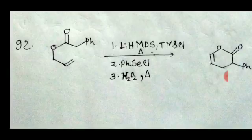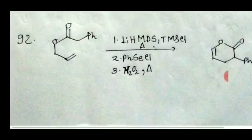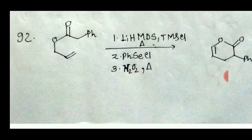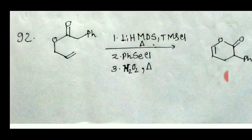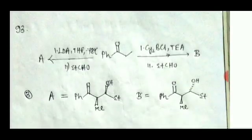For question number 92, the deprotonation occurs from the carbon adjacent to the phenyl group, which is also conjugated with the carbonyl group. It then attacks the double bond, and the resulting negative charge attacks the selenium atom. Finally, H2O2 oxidizes selenium to form an S-O bond, and then elimination gives this product. Option 3 is the correct answer.